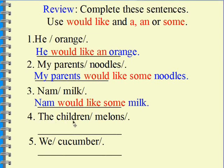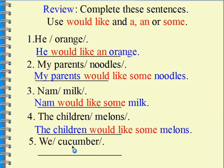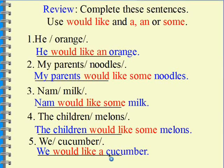Number four: The children... melons. The children would like some melons. Melon is a countable plural noun — they added -s. So we also use 'some'. Number five: We... cucumber. We would like a cucumber. Cucumber is a singular countable noun, so we use the article 'a'.